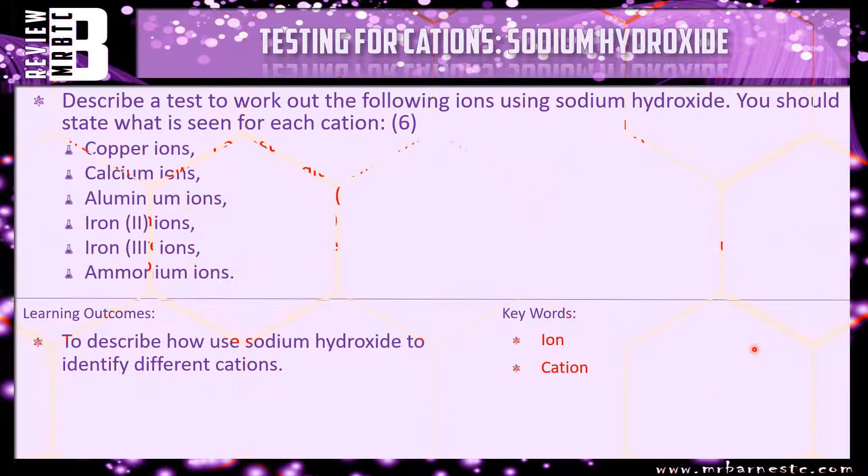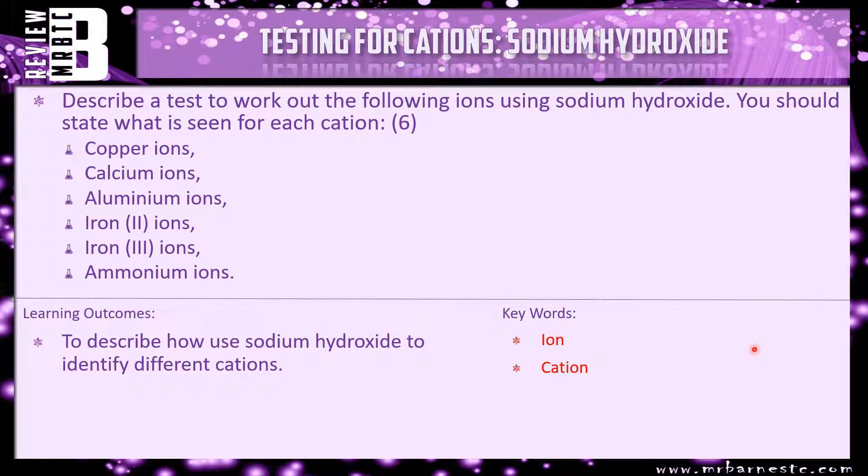That really is everything for this video. So I have got a review question for you, which is: describe a test to work out the following ions using sodium hydroxide. You should state what is seen for each cation. So I've got all the six that we've talked about today. What do you add? And then for each one, what will you see? That brings this video to an end.